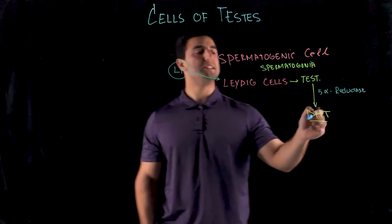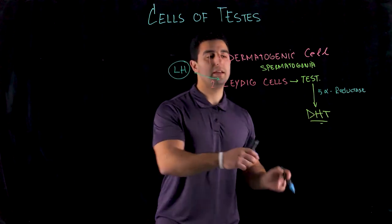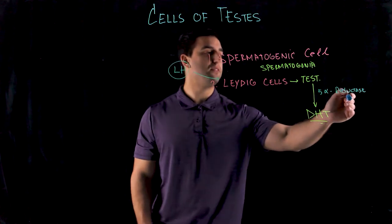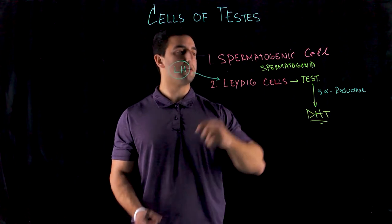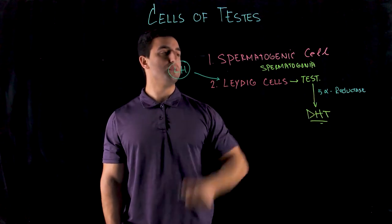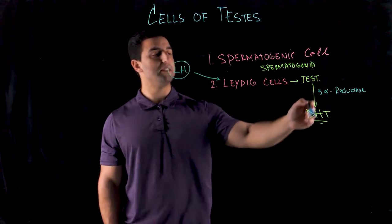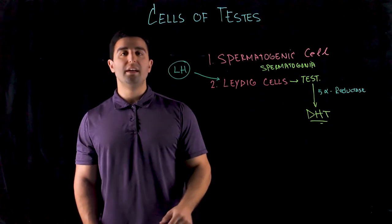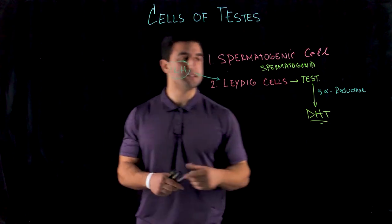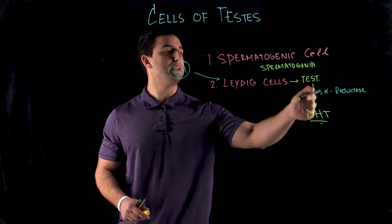This enzyme reduces testosterone by adding a couple of hydrogens to make dihydrotestosterone. This regulation is really important because insufficiencies in 5-alpha-reductase can cause pathological problems. If someone has an inhibition of 5-alpha-reductase, they have a lack of DHT production, which leads to a lack of secondary male sex characteristics. There is also a high prevalence of DHT molecules in hair follicles.